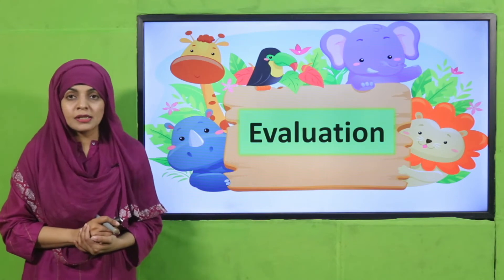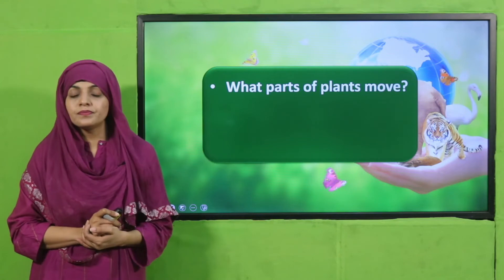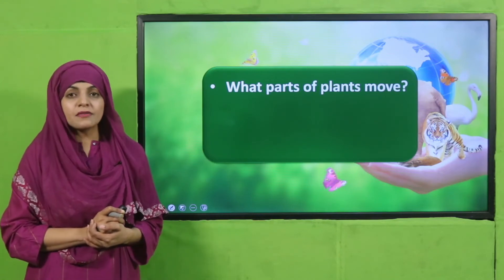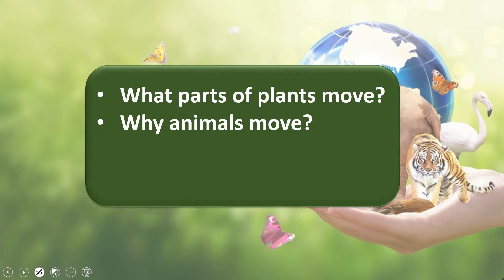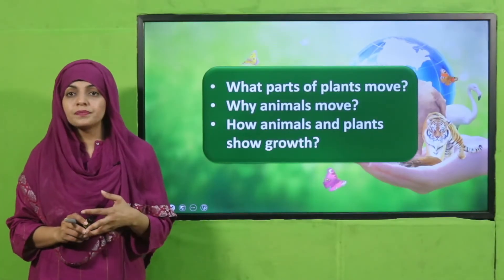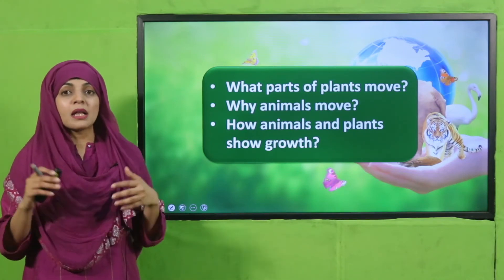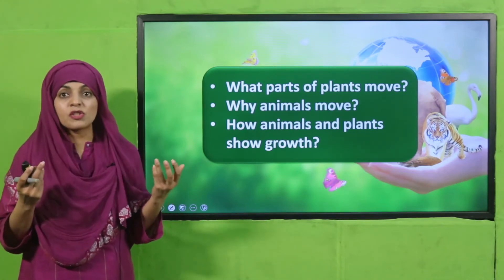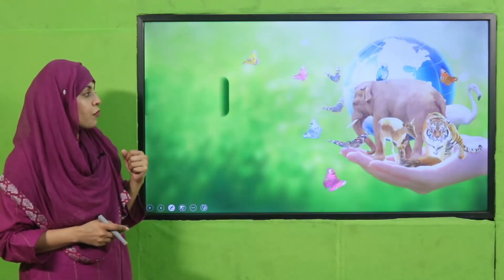Now let's move to the evaluation. What parts of plants move? Stem, leaves, and roots — they show movement. Why do animals move? Animals move to find food, shelter, and to move away from predators. How do animals and plants show growth? Both grow from tiny or baby animals and plants into adult plants and animals respectively.